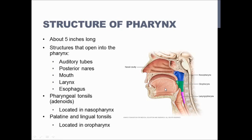Many structures open into the pharynx. The auditory tubes drain fluid from the ears down the throat, which is also why people get post-nasal drip and ear infections can cause sore throats. The posterior nares are just the opening of the back of the nasal cavity into the pharynx. Right now when they're doing COVID-19 tests, they have to insert a really long swab from the nasal cavity all the way back into the nasopharynx, which is quite uncomfortable.